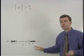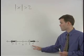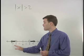On a number line, the points that are greater than two units from zero would be all points greater than two or all points less than negative two.